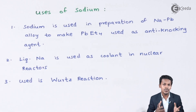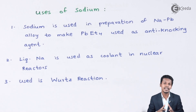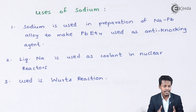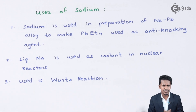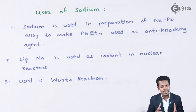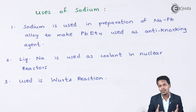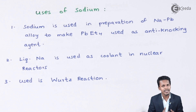Most fuels contain this kind of reagent, which acts as an anti-knocking substance. When the engine runs, combustion causes knocking. Adding this alloy reduces the knocking, which is why these substances are also known as anti-knocking agents.